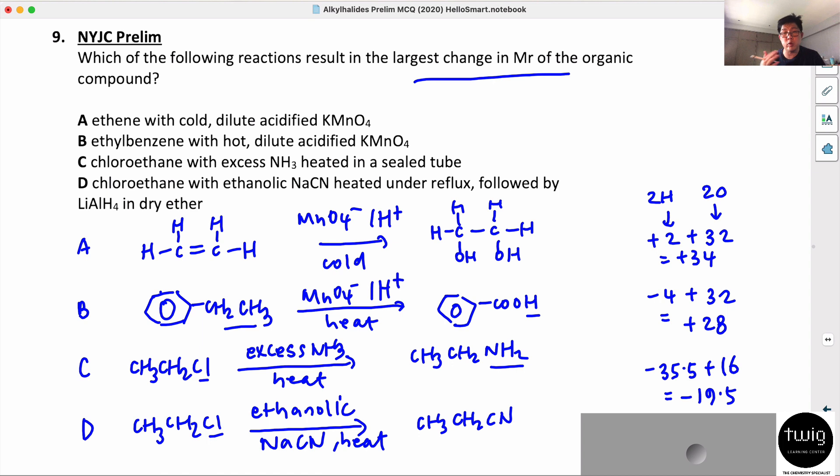For the last one, you take away the Cl in a nucleophilic substitution and replace it with CN. So I'm going to take away 35.5 and add carbon which is 12 plus nitrogen which is 14, that's 26. So you get minus 20.